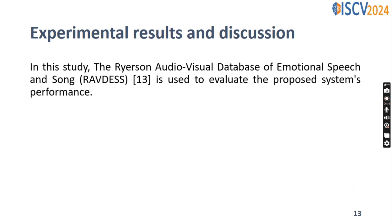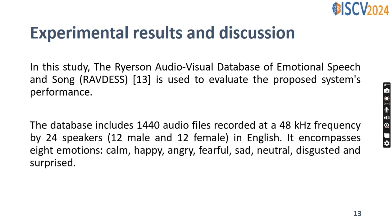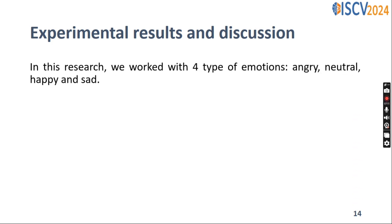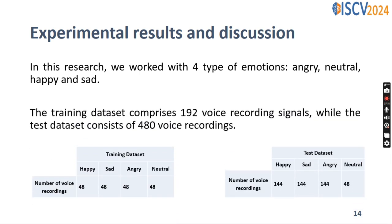In this study, the RAVDESS database is used to test the proposed system's performance. This database includes 1440 audio files recorded at a 48 kHz frequency by 24 speakers in English. It contains eight emotions: calm, happy, angry, fearful, sad, neutral, disgust, and surprised. In this research, we worked with four types of emotions: angry, neutral, happy, and sad. The training dataset contains 192 voice recording signals, while the test dataset consists of 480 voice recordings.